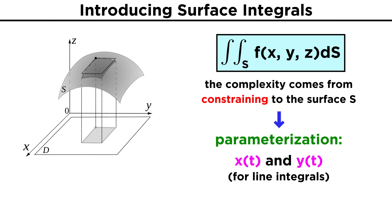And just like we parameterized curves for line integrals in terms of a new variable T, it proves useful to parameterize the surface S in terms of two new variables, which we will call U and V. The coordinates of the surface S can be expressed as a vector R equals X of U V, Y of U V, Z of U V.